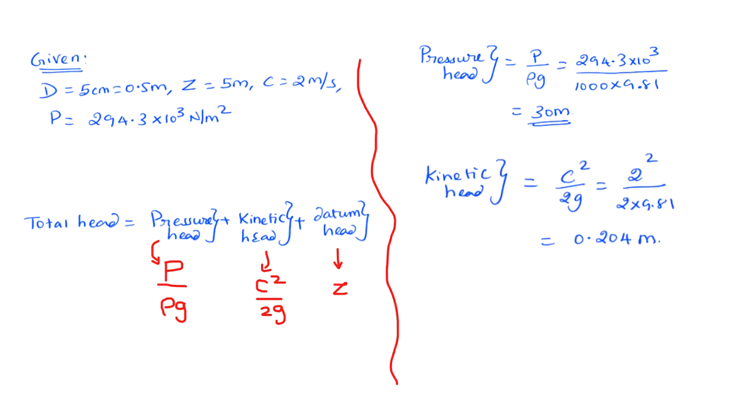The kinetic head is c square by 2g. All that I do is that I just substitute the value for the kinetic head. So c square is 2 square divided by 2 times 9.81 which is the kinetic head.